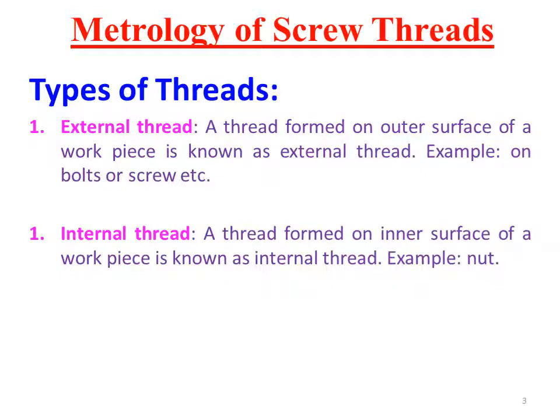There are different types of screw threads. The first is external threads — a thread form on the outer surface of a workpiece is known as an external thread. The best example is the threads cut on the outer surface of a shaft, forming a screw or bolt. Internal threads — a thread form on the inner surface of a workpiece is known as an internal thread. The best example is a nut, which has internal threads on its inner surface.